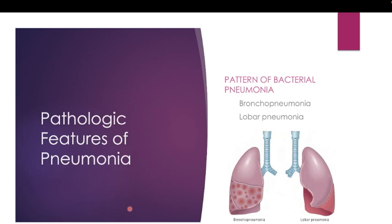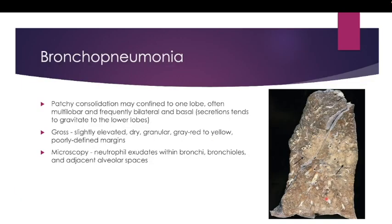There are two patterns of bacterial pneumonia. Bronchopneumonia involves patchy consolidation that may be confined to one lobe but is often multilobar and bilateral and basal, because secretions tend to end up in the lower lobes due to gravity. Lobar pneumonia involves consolidation of a large portion or entire lobe. Grossly, bronchopneumonia appears as slightly elevated, granular, gray-red to yellow lesions with poorly defined margins.